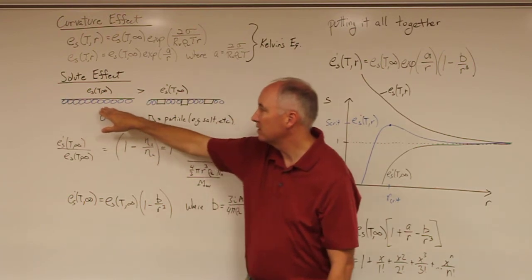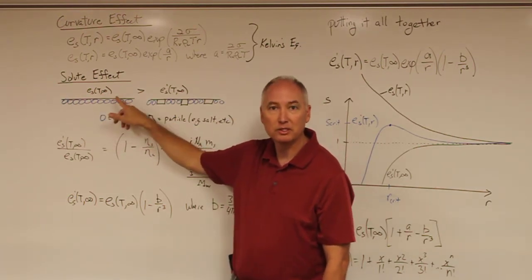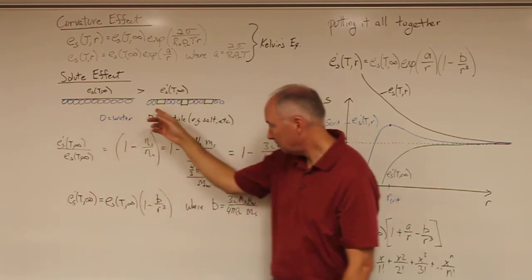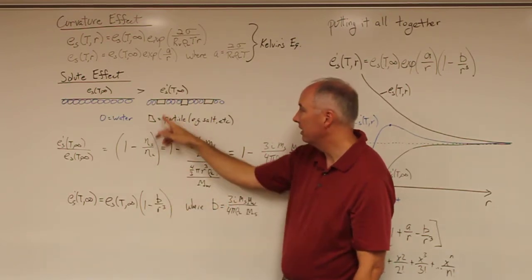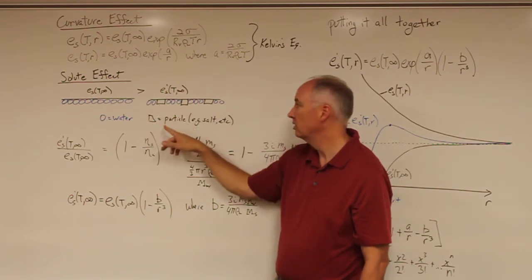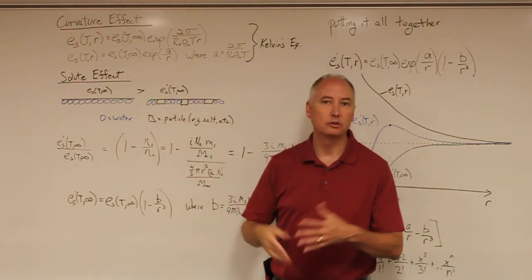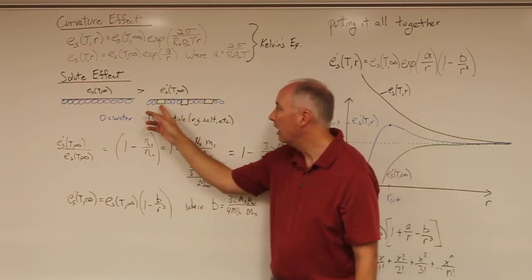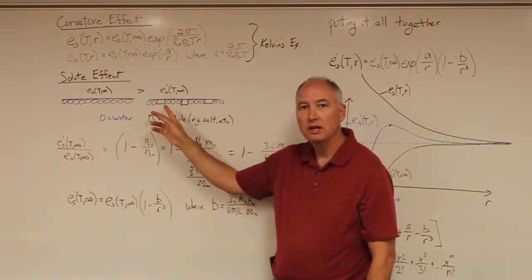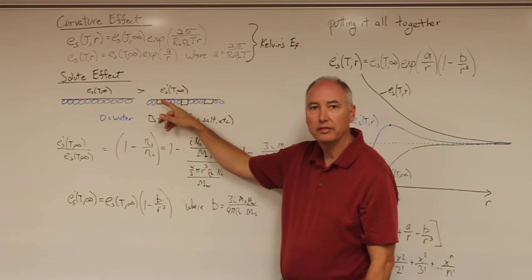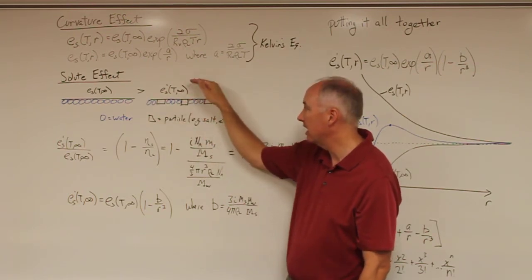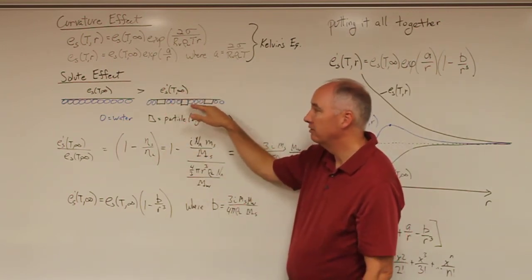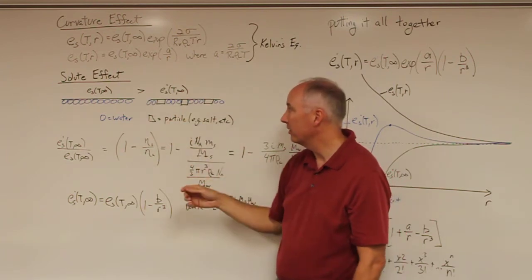If we have a plain surface of pure water where all of these blue circles represent water molecules, you have a saturation vapor pressure over a plain surface of pure water. If we introduce impurities into the water — in this case represented by these black squares, which are particles, and this could be salt, sulfate, nitrate, or any one of a number of particles present in the atmosphere — you'll notice that it actually reduces the number of water molecules at the interface between the water droplets and the air, and that will consequently reduce the likelihood of evaporation from the surface.